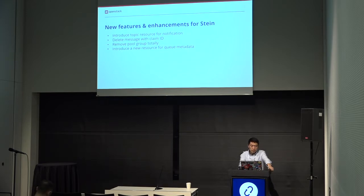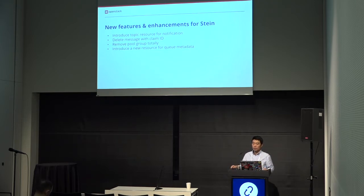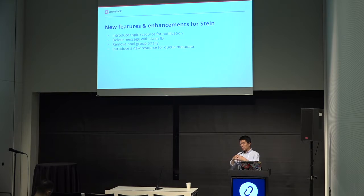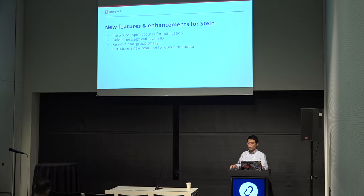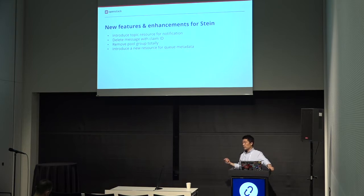For Stein, we have some things we would like to do — these have been on the list for quite a long time. The first one is we would like to introduce the topic as a first-class standalone resource for notification. Currently, the notification service is tightly coupled with the queue service. We would like, just like SQS and SNS, to have a separated first-class resource named 'topic' just for notification. So when you want to subscribe, instead of subscribing to a queue, you subscribe to a topic.